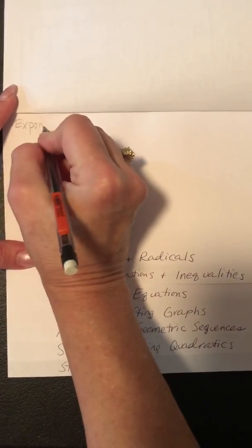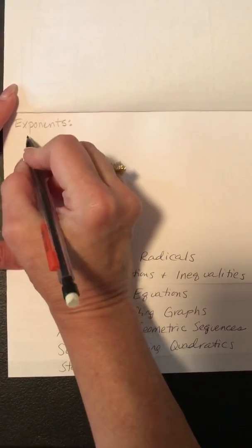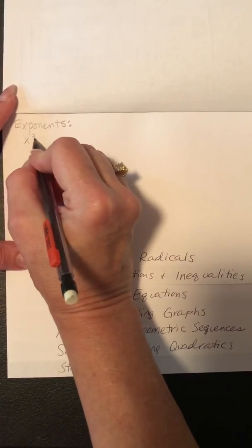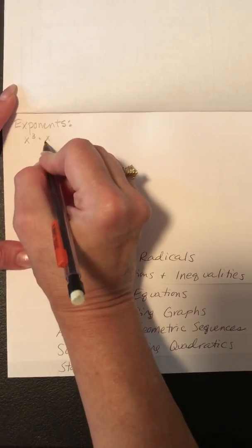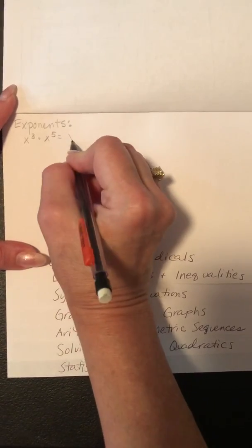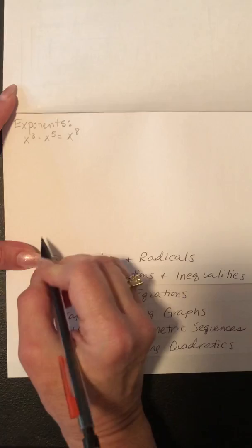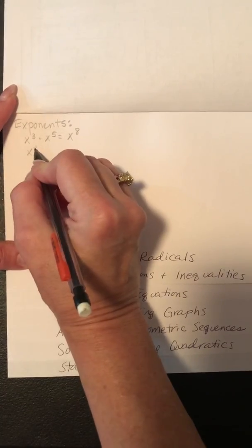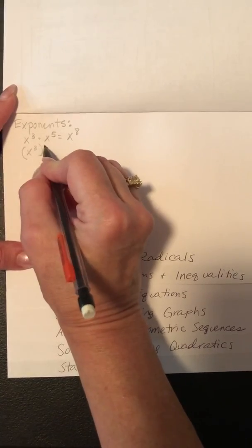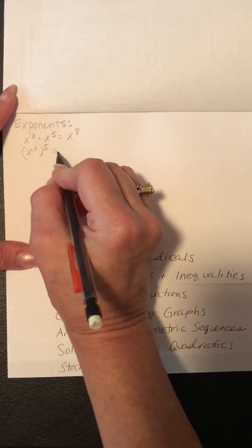With exponents, if the bases are the same when you multiply, you keep the base the same and you add the exponents. If there's one base with an exponent and another exponent on the outside, you multiply them.